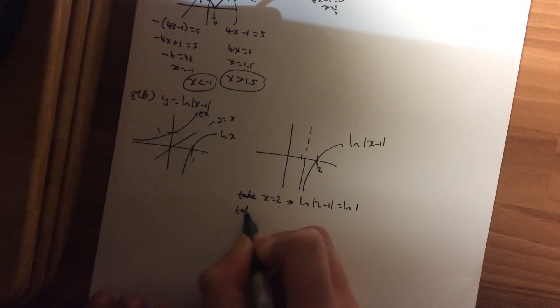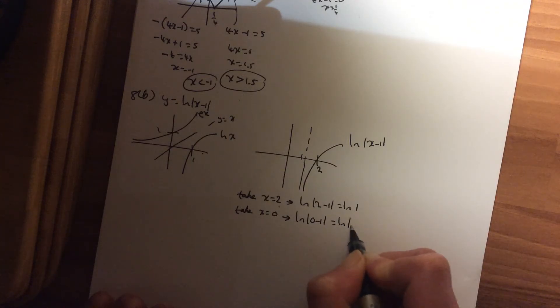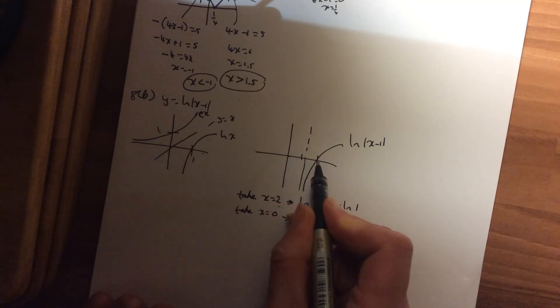If I put in x = 0 into that, I get log|0 - 1|. So log the positive, that's 1. I get the same answer. So 0 gives me the same answer as the 2.